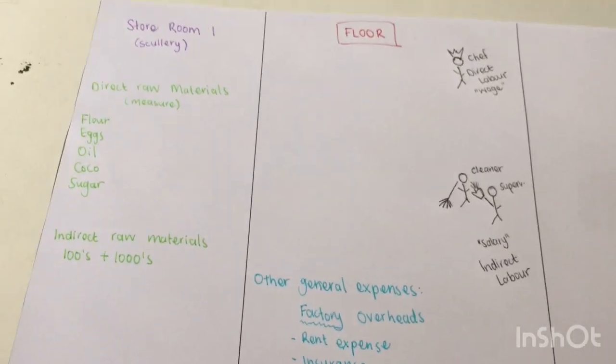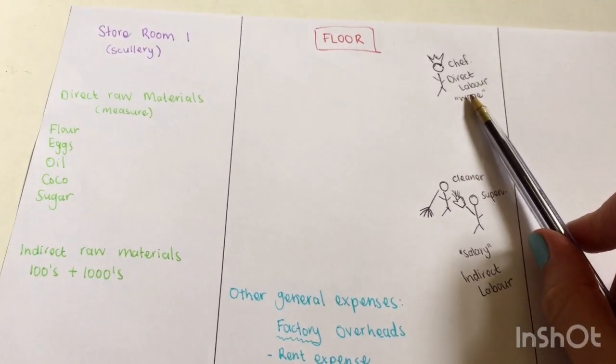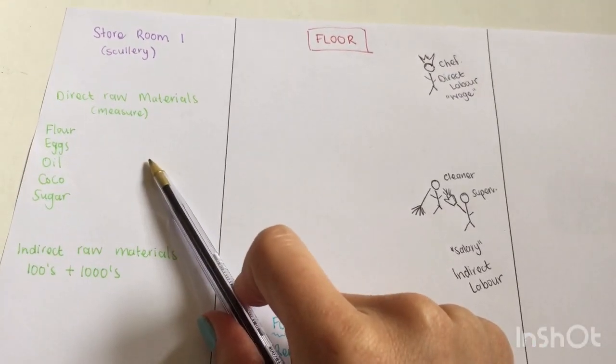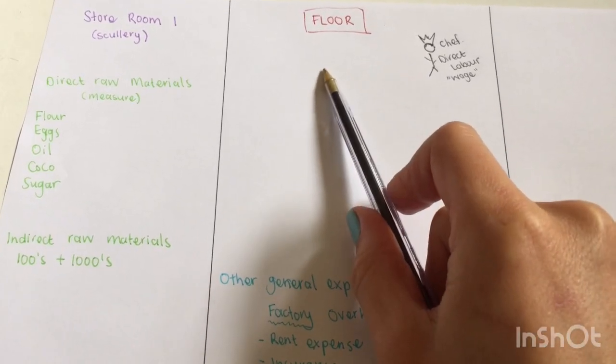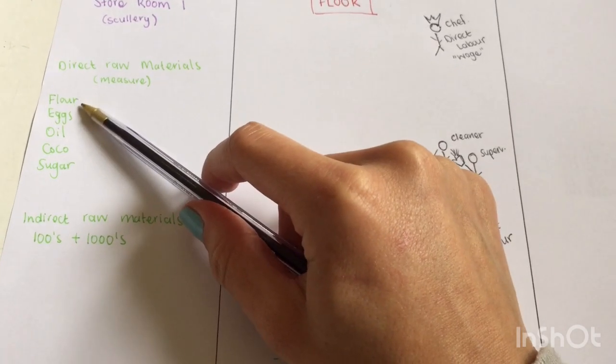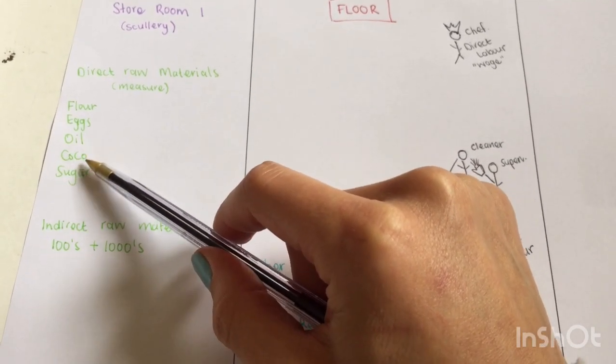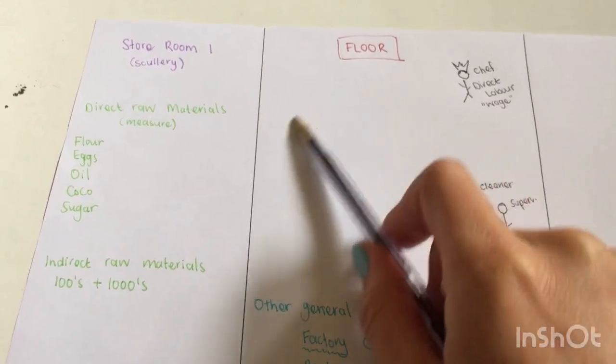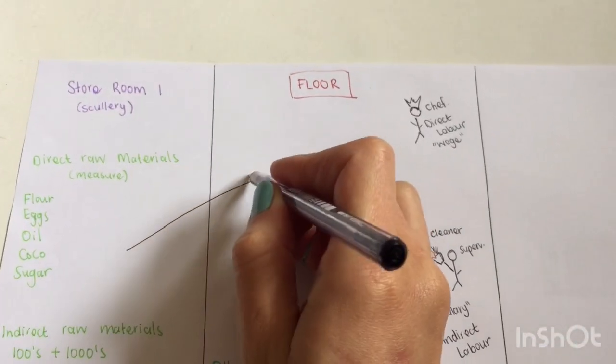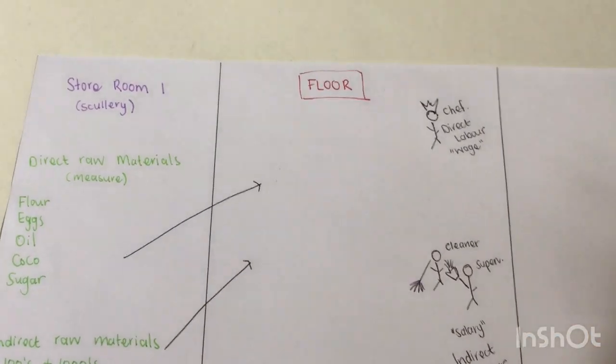If we go back to looking at the whole factory, my chef will go into the scullery and he's going to take out what he needs in order to bake cakes. So there might be a lot of bags of flour, a couple of trays of eggs, a couple of bottles of oil, etc. He's only going to take the part that he needs to bake cakes for that specific day. So you will take products out to the kitchen to bake.